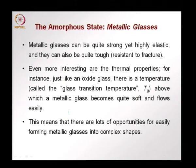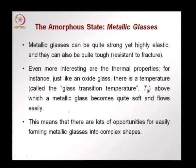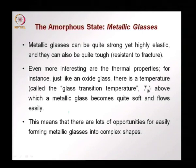Metallic glasses can be very strong and yet highly elastic. Generally, we find that strong materials are more brittle and have no elongation. But metallic glasses are interesting because they can be strong, elastic and tough, meaning they can resist fracture and cracking well. Also more interesting are the thermal properties.